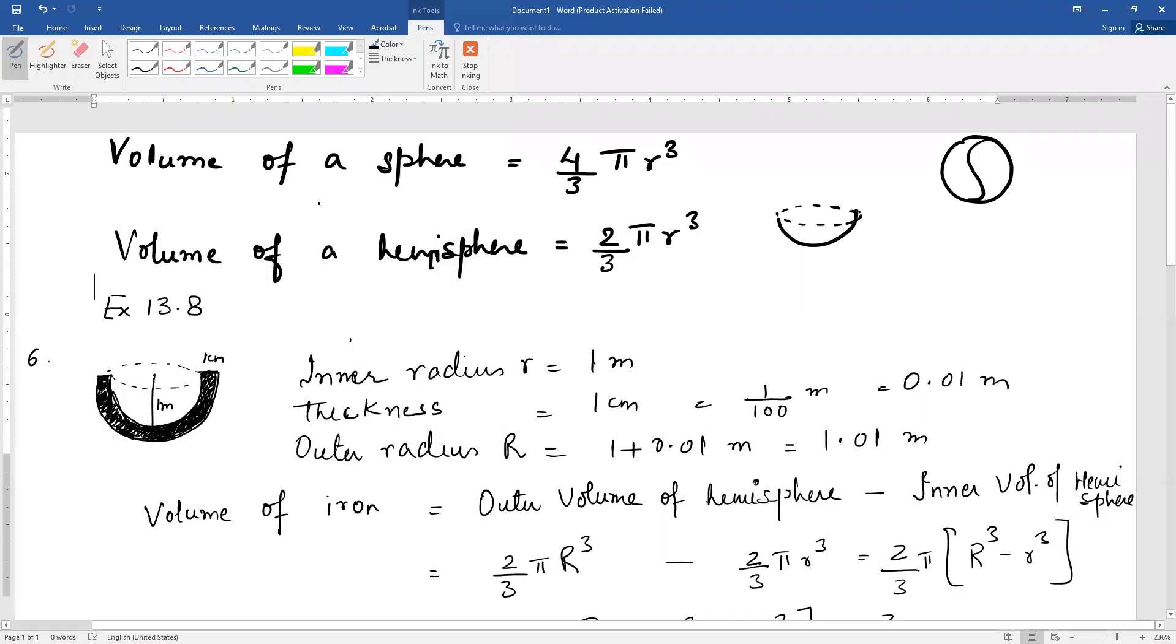Good morning students. As you have already studied, volume of a sphere is 4/3 π r³ and volume of a hemisphere, which means half of the sphere, is 2/3 π r³.